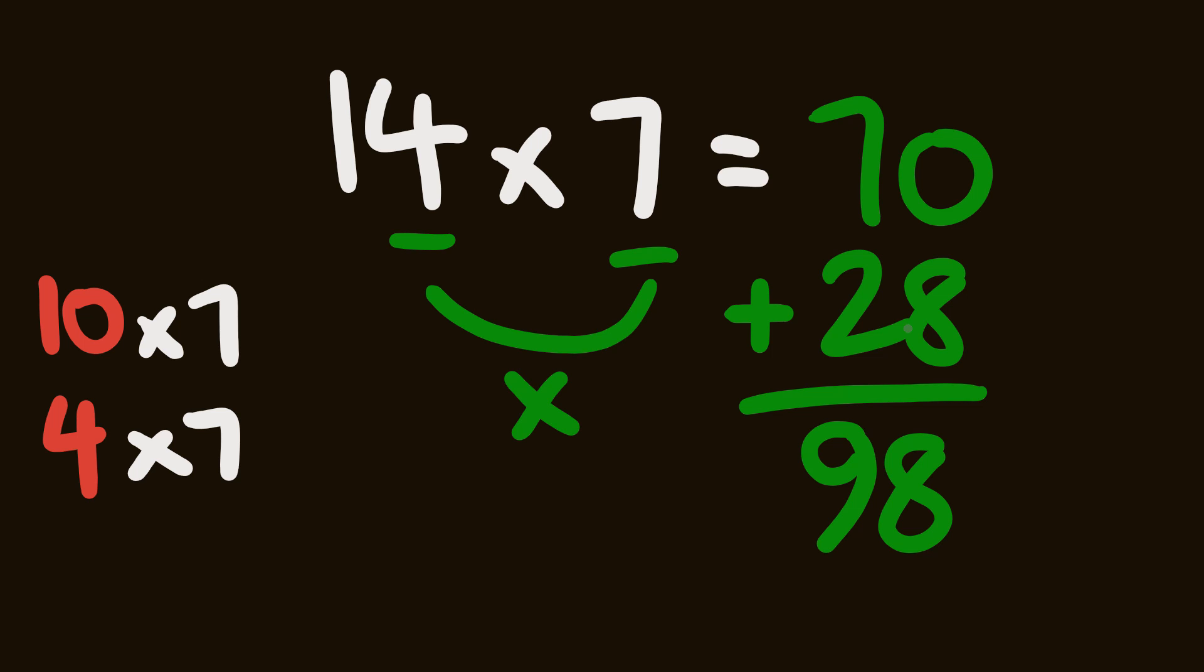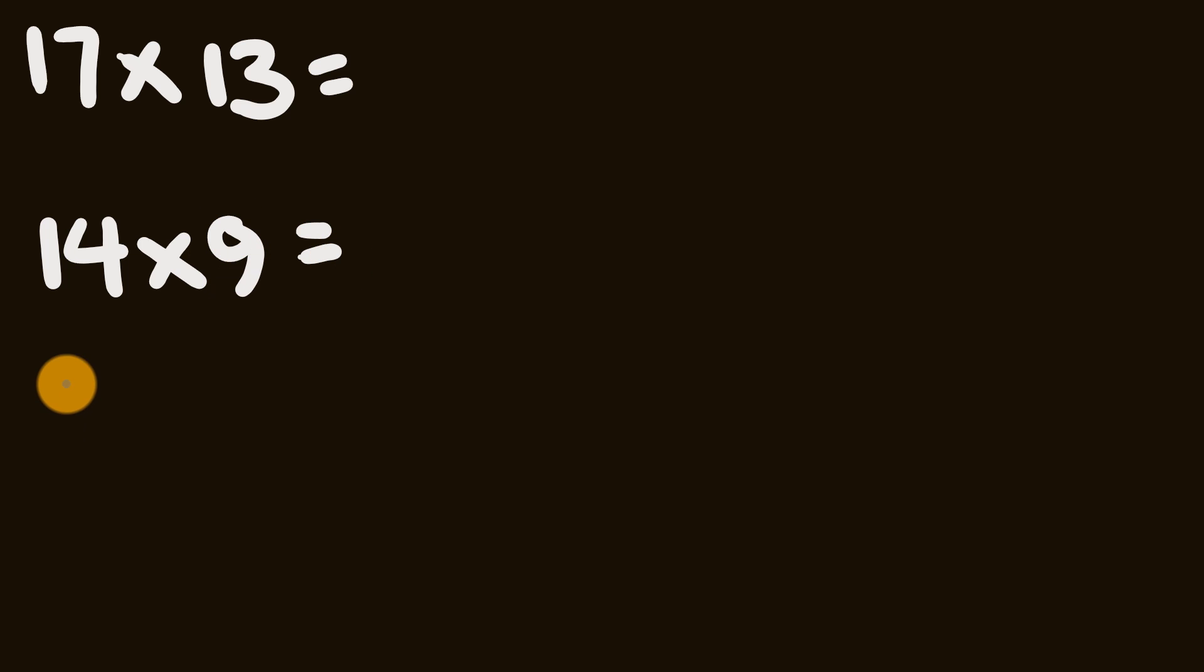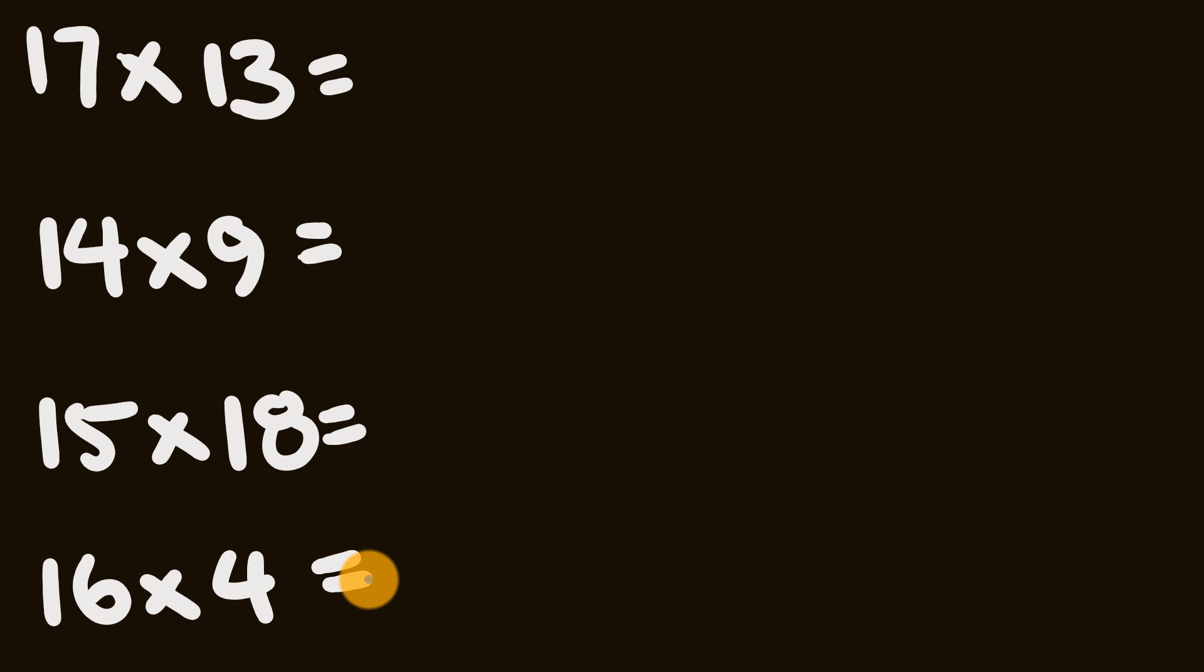Now what about a couple of these that you can practice right now? We'll mix them up a little bit. So first off, what about we do 17 multiplied by 13? Next we'll do 14 multiplied by 9. Next after that we'll do 15 multiplied by 18, and then finally we'll do 16 multiplied by 4. Cool, so give these a go. Pause the video and see how you go. And while you're at it, if you haven't already, please hit the like button.